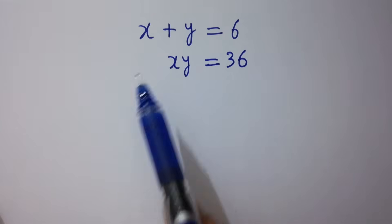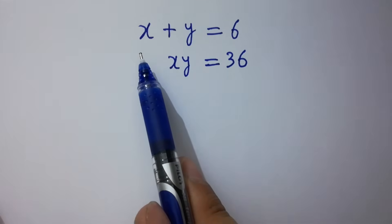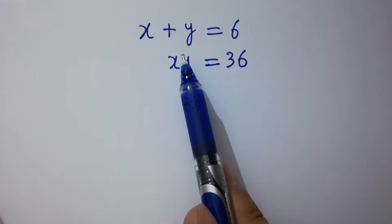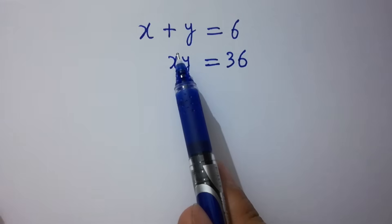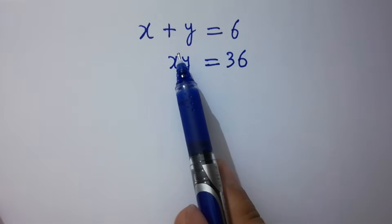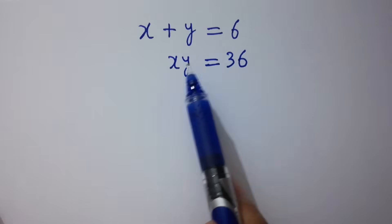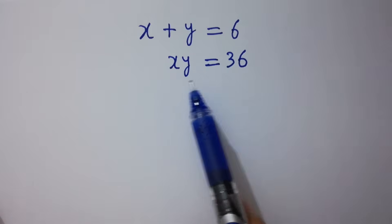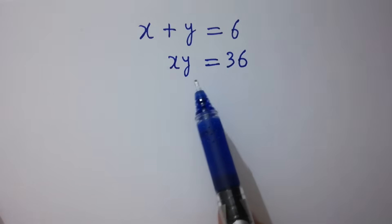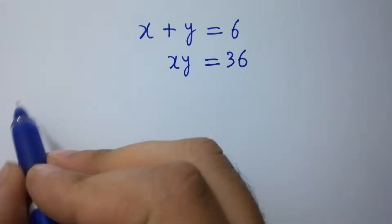Hello friends. How to solve for x and y in this problem, where x plus y equals 6 and x times y equals 36. Let's have a solution.